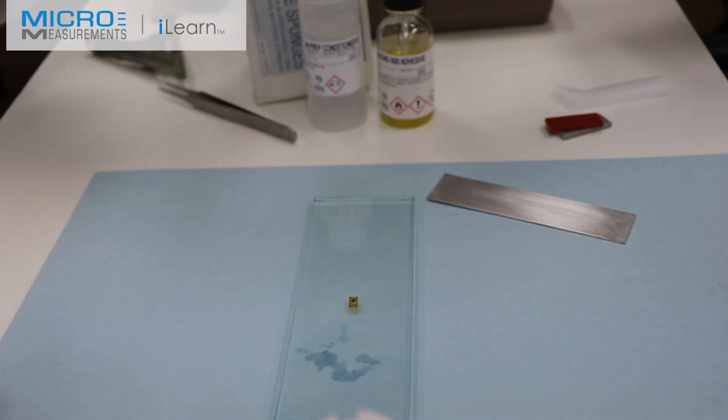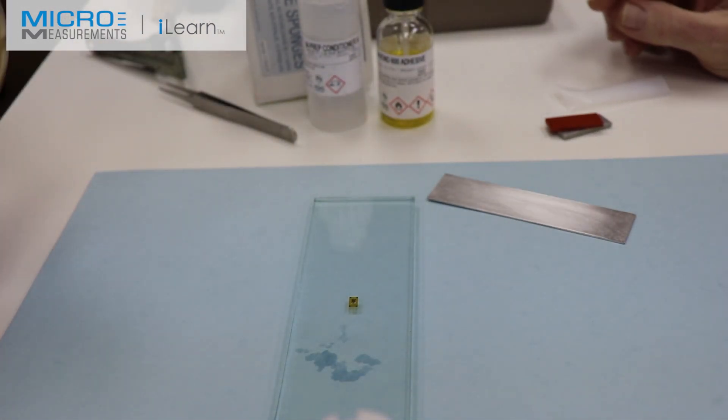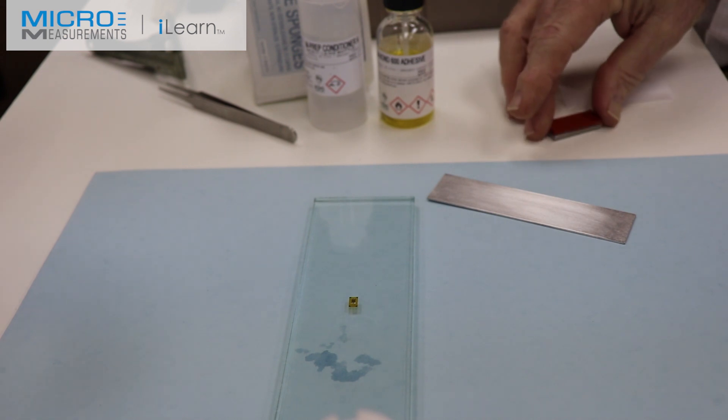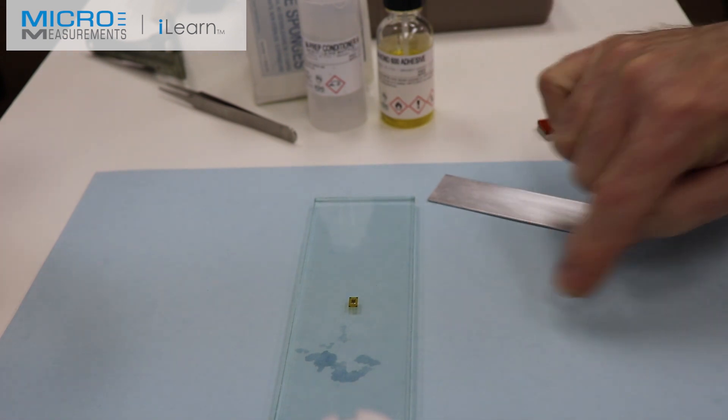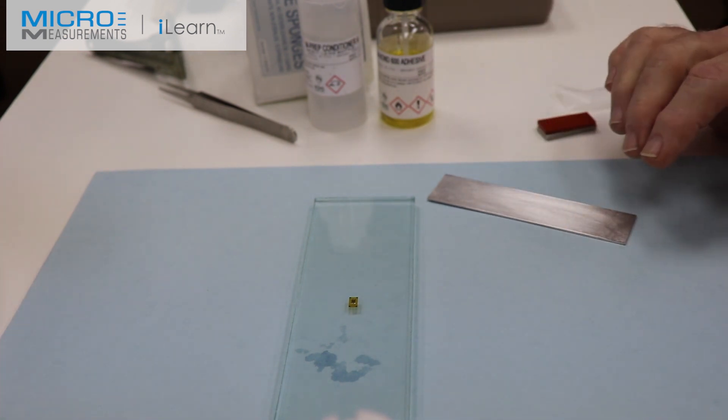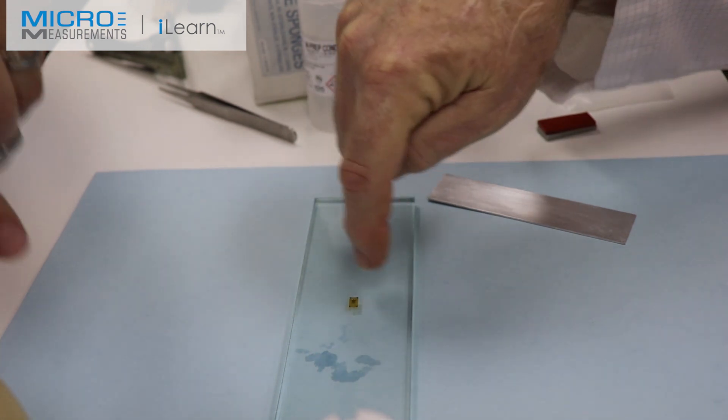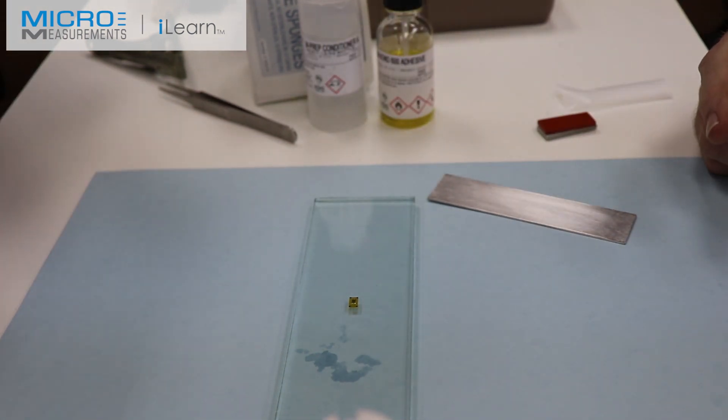He'll then take a piece of the MJG2 tape, the Mylar tape with a silicon mastic, and he's going to cover just the tab end of the gauge. And the reason for this is we don't want the adhesive wicking up onto the tabs, and we also want to give that adhesive a path for the solvents to escape. So there'll be three free sides on the gauge with the tape just running across the end of the gauge covering the tabs.